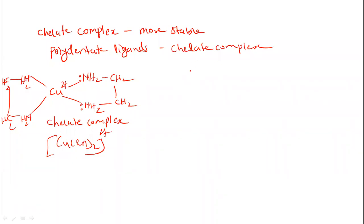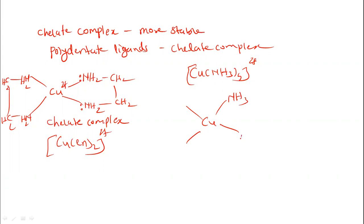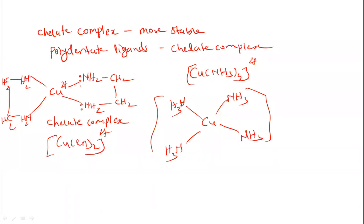Compared to a monodentate ligand complex such as [Cu(NH3)4]2+, where ammonia is a neutral monodentate ligand with no chelate ring formed, the chelate complex is more stable because of the heterocyclic ring structure. Polydentate ligands — whether bidentate, tridentate, tetradentate, or hexadentate — form more stable complexes with the central metal ion. For example, [Zn(en)2]2+ is more stable than [Zn(NH3)4]2+.